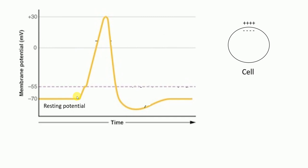When cells are at rest they are at minus 70 millivolts. When some kind of stimulus comes in, because of the stimulus, positive charge from outside goes into the cell, and hence the cell becomes less negative inside. That is why this voltage goes up — because the positive charge from outside diffuses into the cell.